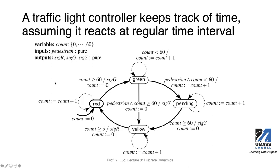This state machine controls the traffic lights, and as part of the design there should be a sensor to detect if a pedestrian is present. This forms the input to the system and can change with the environment. A pedestrian could arrive any time, even between clock ticks, so there's uncertainty in the timing of this input signal.